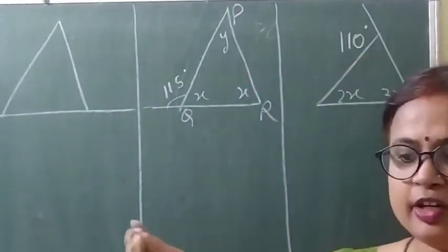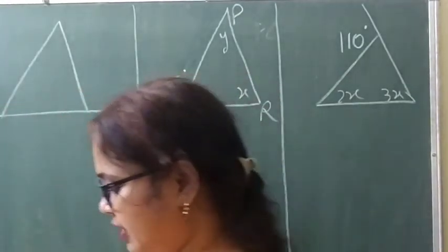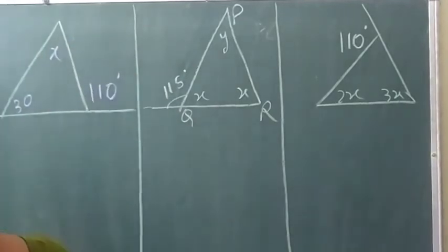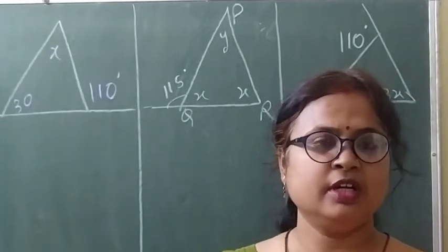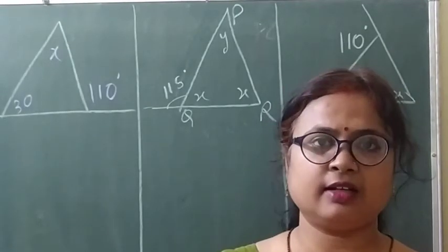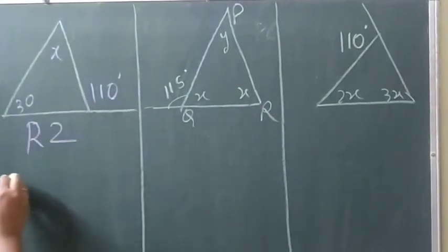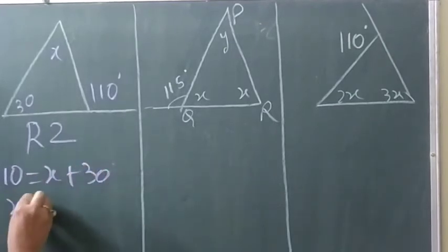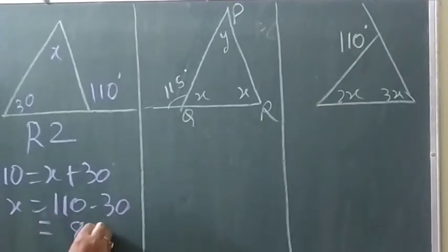These are three figures and you have to find the unknown value and give the reason. In the first figure, the angles are 30, x, and the exterior angle is 110. Using Reason 2 — the exterior angle equals the sum of its two interior opposite angles — we write: 110 equals x plus 30. So x equals 110 minus 30, which is 80 degrees.